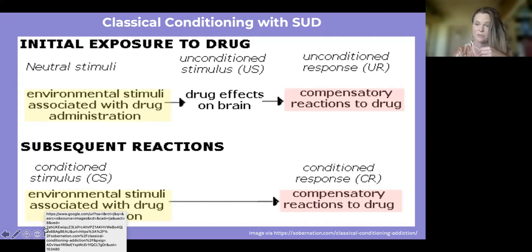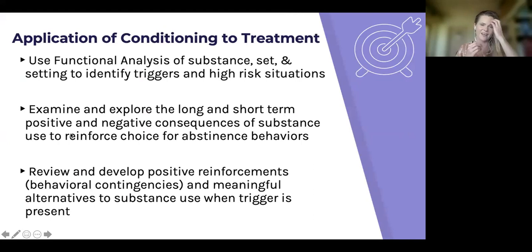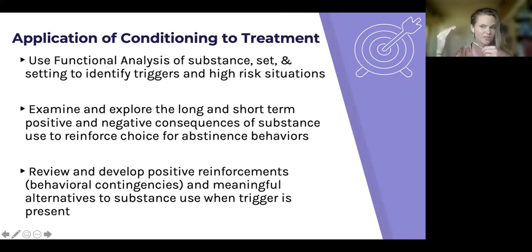This helps us remember how fraught the world can feel for people in recovery — there can be landmines everywhere that other people don't recognize. How do we apply the principles of conditioning to treatment? One of the standard interventions is to use a functional analysis of substance set and setting. In AA and NA language, that's people, places, and things — where you identify triggers and high-risk situations, because that awareness is the foundational piece that leads to all later skills. Then you want to explore the long and short-term positive and negative consequences of substance use, and develop positive reinforcements — behavioral contingencies — as well as meaningful alternatives to substance use when a trigger is present.